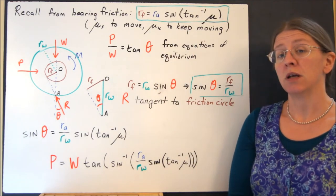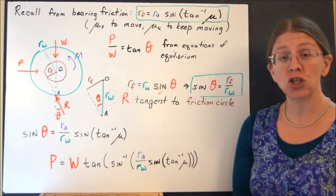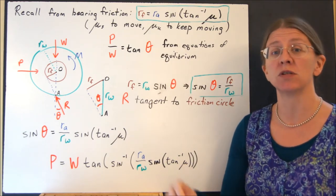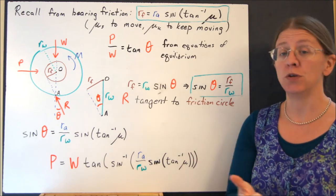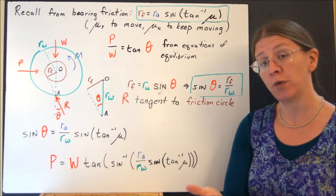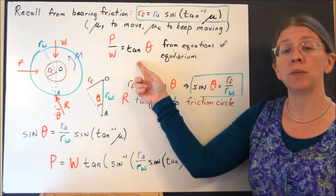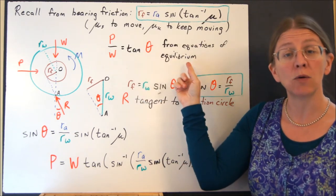Recall from bearing friction, there's this idea of a friction circle. The friction circle was the radius of the axis times the sine of the inverse of mu. And I have mu S if I want to start it moving, or mu K if I want to keep it going. And I have P over W is tan theta. That comes from the equations of equilibrium.